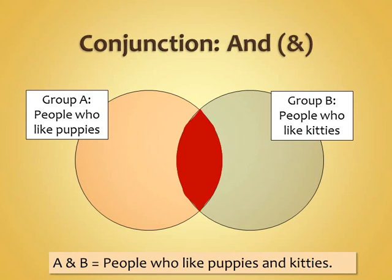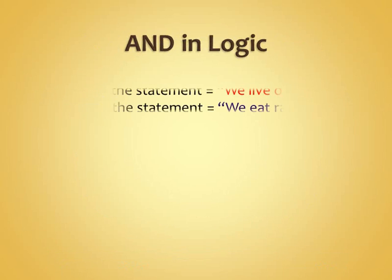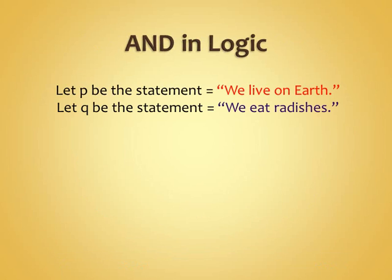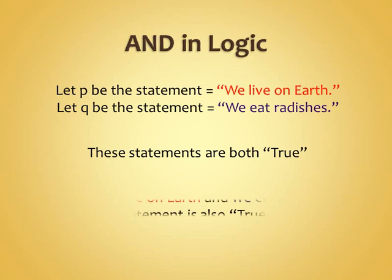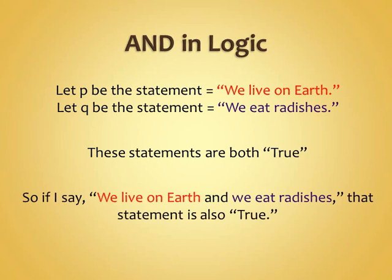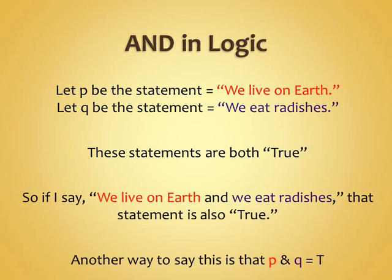In logic, you might say something like: we live on Earth, we eat radishes. So P would be 'we live on Earth' and Q would be 'we eat radishes.' These are both true statements — we are living on Earth and we eat radishes. So if I say 'we live on Earth AND we eat radishes,' that is a true statement, because both are true. We can say that P AND Q is true.